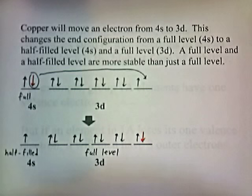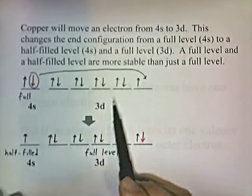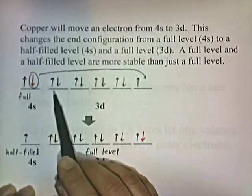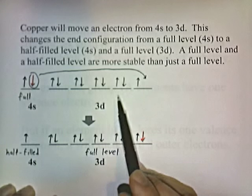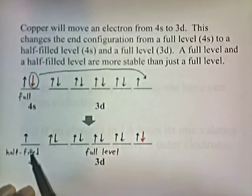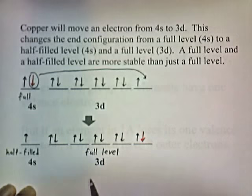Copper will move an electron from 4s to 3d, changing the configuration from a full 4s level to a half-filled level, and creating a full sublevel in the D. A full level and a half-filled level are more stable than just a full level. Copper has two electrons in the 4s — that makes it full — and it has an almost complete sublevel in D with nine electrons. If it takes one electron from 4s and moves it to the 3d, now the 4s is half-full and the 3d is full. So you've gone from one full sublevel to a full sublevel and a half-filled sublevel, which is a greater amount of stability.